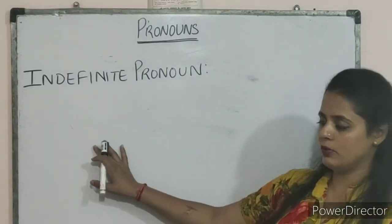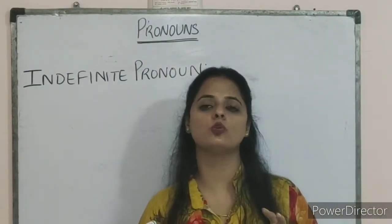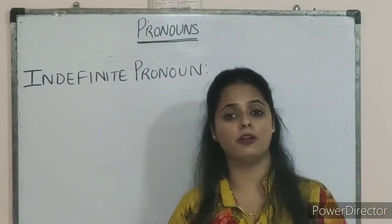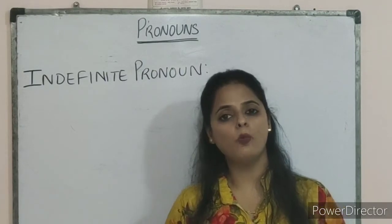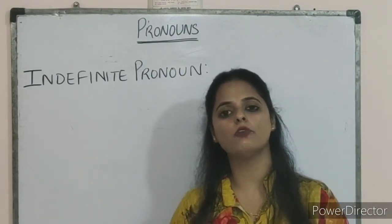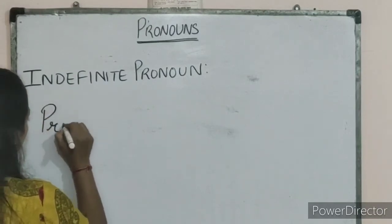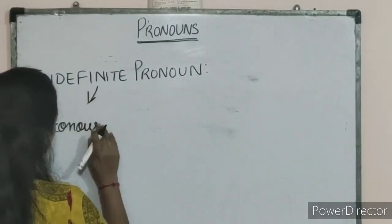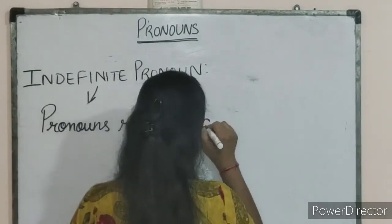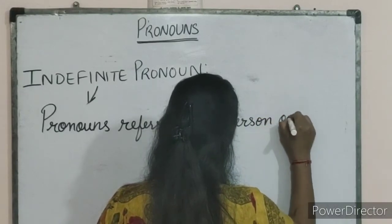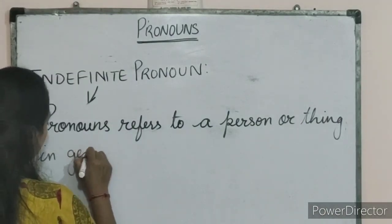Now students, you can see indefinite pronouns. What exactly is an indefinite pronoun? These are the pronouns which are used or which refer to a person or anything in a general manner, not in a specific manner. For example, somebody, anybody, nobody, everybody are some kinds of indefinite pronouns. We can say that indefinite pronouns refer to a person or thing in general.